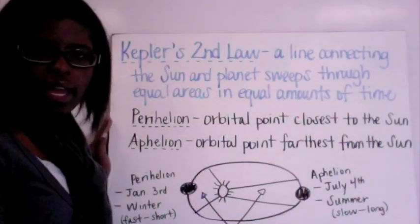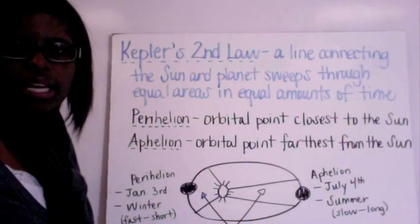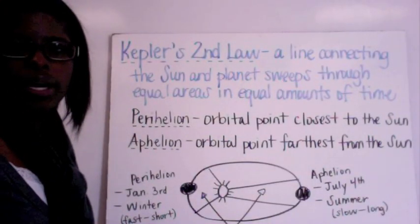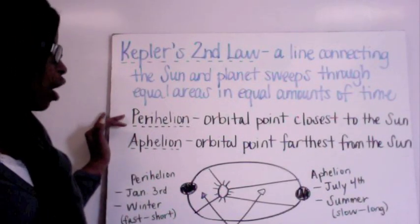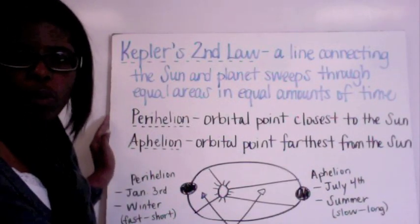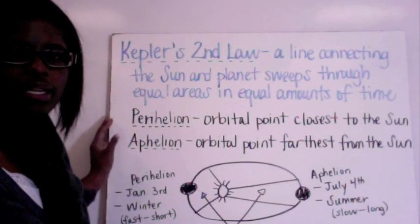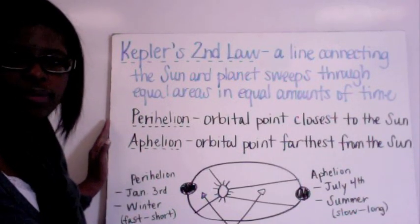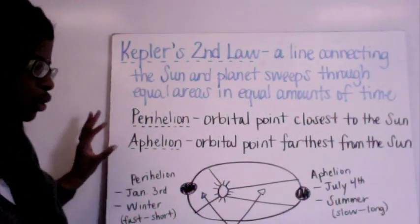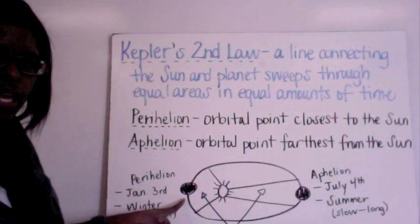So in Kepler's second law a line connecting the Sun from the planet sweeps through equal areas in equal amounts of time. So we have this term called perihelion which is the orbital point that's closest to the Sun and then we have aphelion which is the orbital point that's furthest from the Sun. In this diagram I'm going to show you which is which. So we have the planet here.